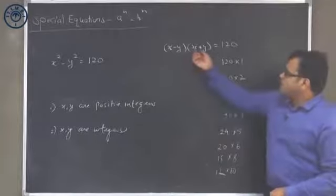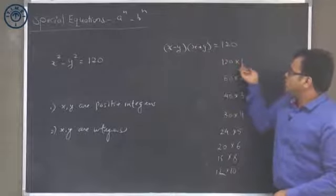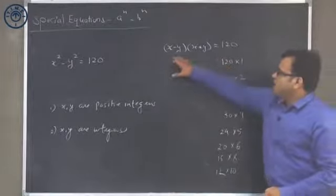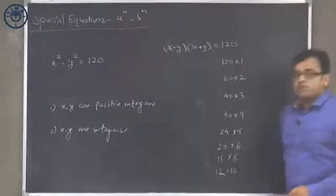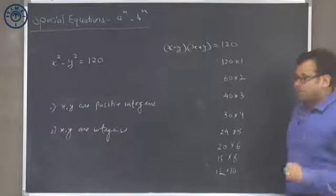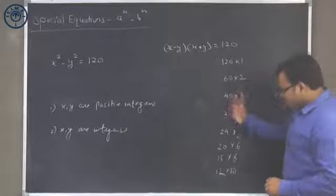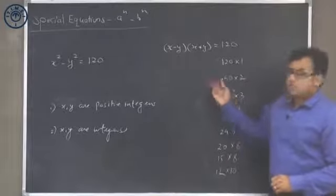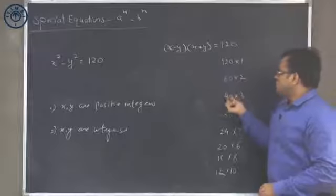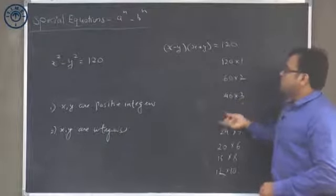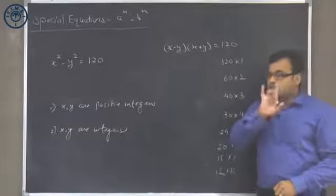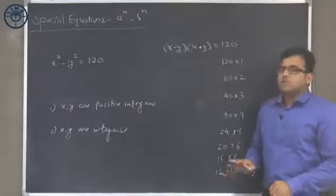If x minus y times x plus y equals 120×1, can we say x plus y equals 120 and x minus y equals 1? This will give values of x and y that satisfy the condition — however, there is a catch. We will try the same thing with all other combinations, where x plus y equals the larger number and x minus y equals the smaller number. But there is just one more catch to keep in mind.